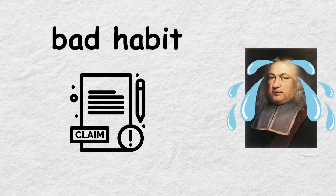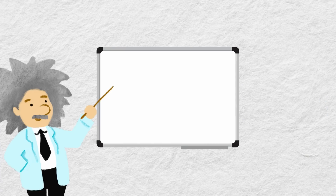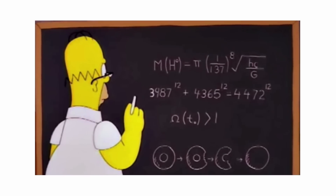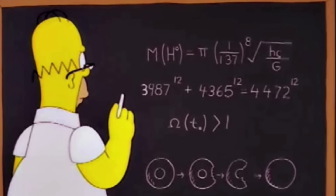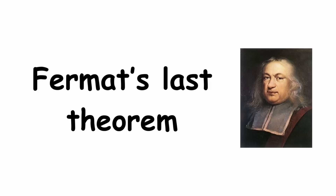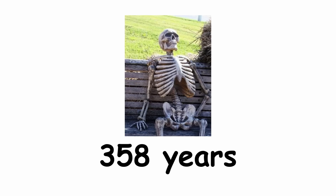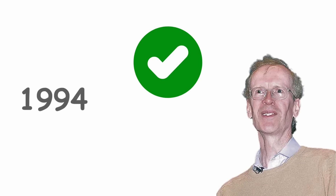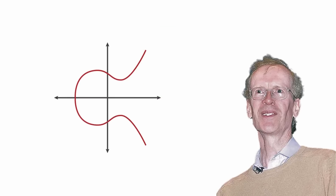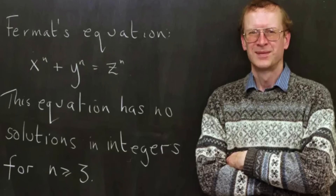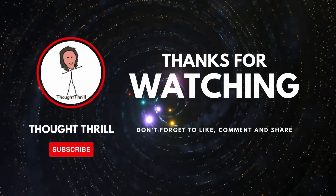In fact, Fermat actually had a bad habit of making claims without proving them, and mathematicians had to fill in the blanks. Of all of his statements, the preceding one was the last to go unproven, so it is known as Fermat's Last Theorem. Although simple to state, the theorem resisted proof for a whopping 358 years. The first correct proof was created by English mathematician Andrew Wiles in 1994 using the study of elliptic curves, for which he went on to win the prestigious Abel Prize in 2016.